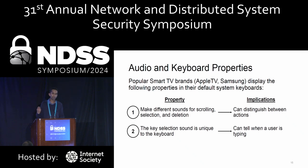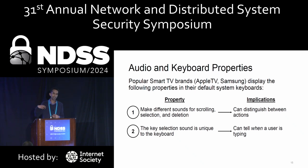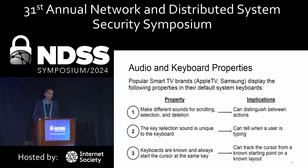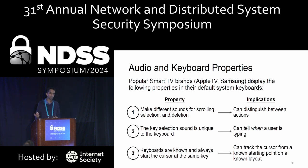The second property is that the key selection sound on these systems is unique to the keyboard and not present elsewhere on the system. If a user wants to select a video to play, that sound is different than the sound made to select the character A when typing. This means an attacker can tell when a user is typing as opposed to interacting elsewhere on the television. The final property is that in their system defaults, the keyboards on these platforms have a known layout and always start the cursor on the same key, so we can track the cursor from a known starting point.